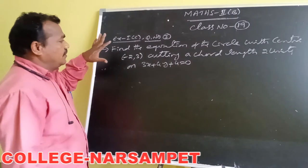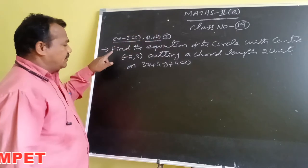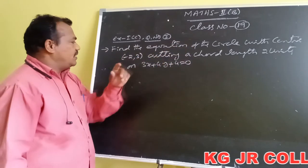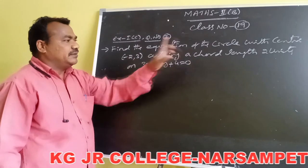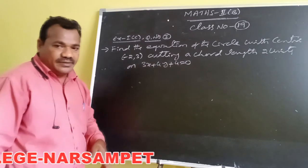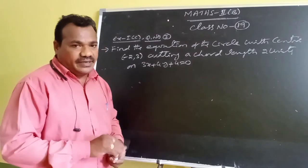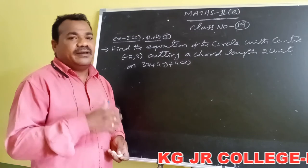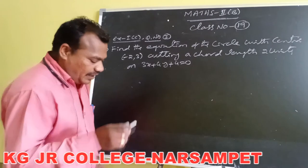This is one of the problems in Exercise 1c, question number 3. The problem is: find the equation of the circle with center coordinates minus 2 comma 3, cutting a chord of length 2 units upon the line 3x plus 4y plus 4 equals 0. Given that the center coordinates are given and the length of the chord is given, we have to find out the radius and then write the circle equation in the standard form.